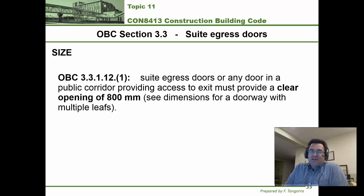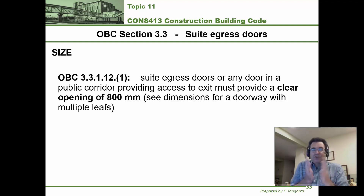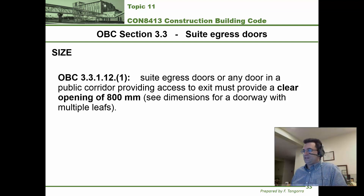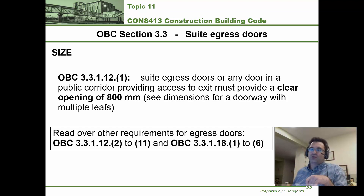Finally, let's look at the size of suite egress doors. Just like corridor widths, suite egress doors require minimum dimensions to ensure humans can get through them comfortably. According to sentence 1 under Article 3.3.1.12, the clear opening must be at least 800 millimeters. There are also other requirements related to this listed in your course notes — you must read them and know where to find them in the building code.